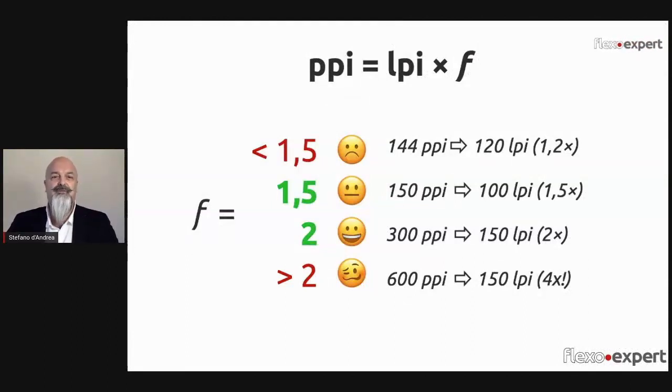Let's see some examples. If I have one image at 144 pixels per inch and I want to print at 120 lpi (that is 48 lines per centimeter), the resulting factor is 1.2. It is insufficient. Please don't do that.